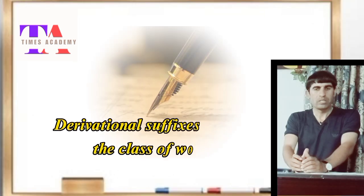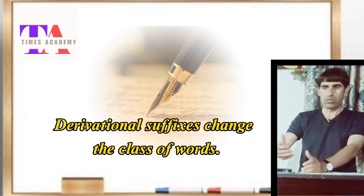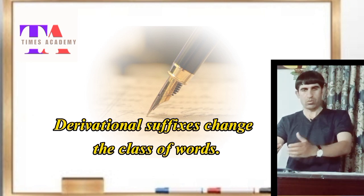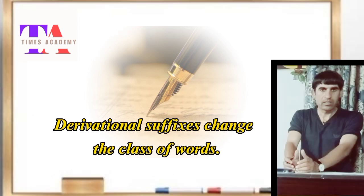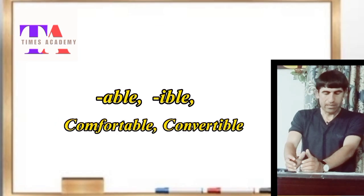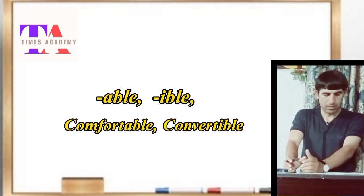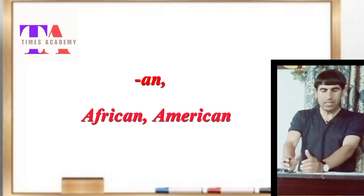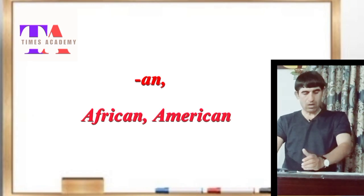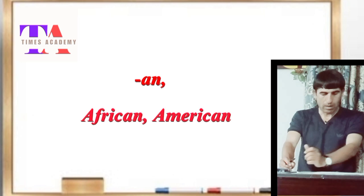Morphology also deals with derivational suffixes, meaning the words that we put after words to change the class of the words. For example: number one, -able or -ible converts a word into adjective form, for example comfortable and convertible. Number two, -an or -ian changes the word into a noun or adjective, for example African or American.